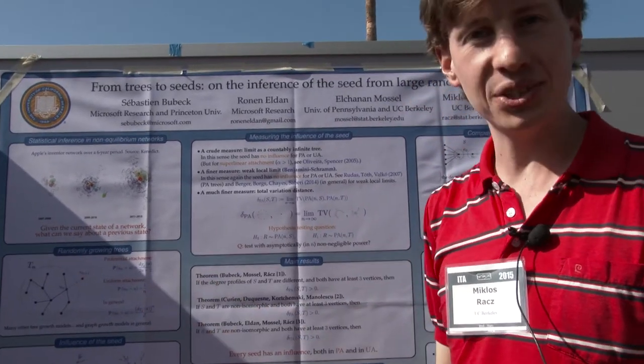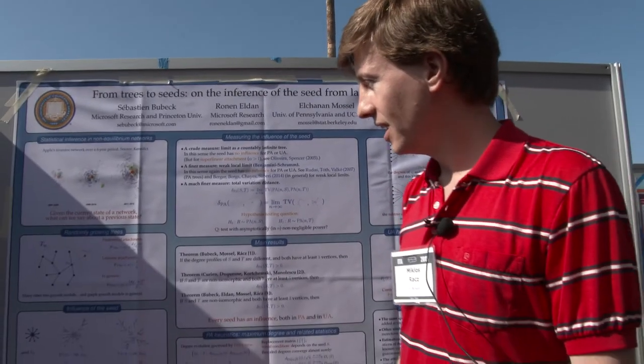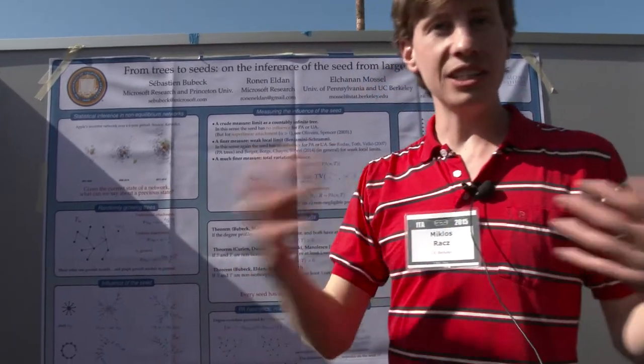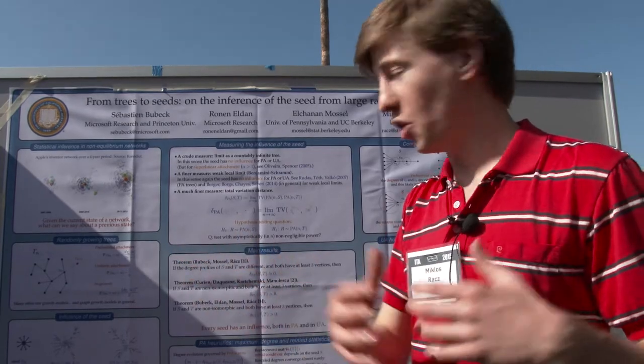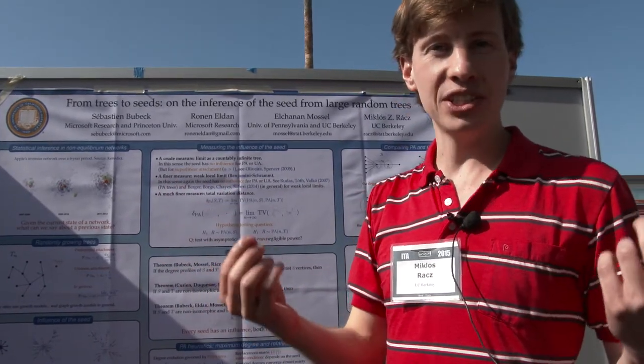Perhaps the two most natural things to look at are preferential attachment and uniform attachment. And so you can start these tree growth processes or any kind of random graph growing process from any kind of initial seed.